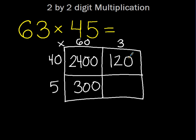What do I do next? 3 times 5 equals 15. What do I do last to make sure I've solved my problem? You add them all up.